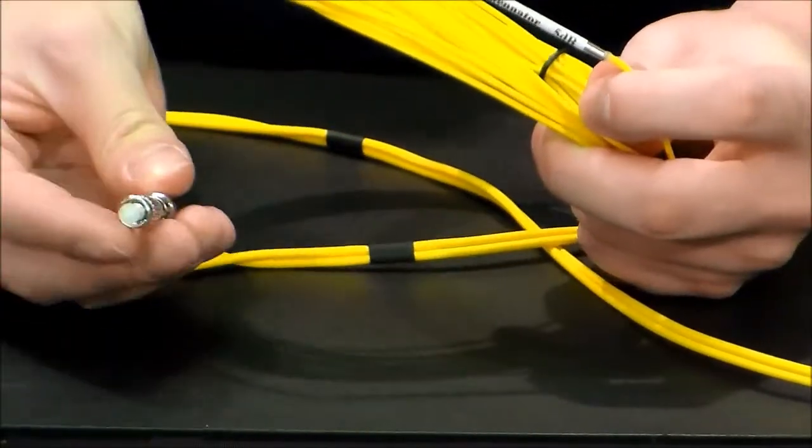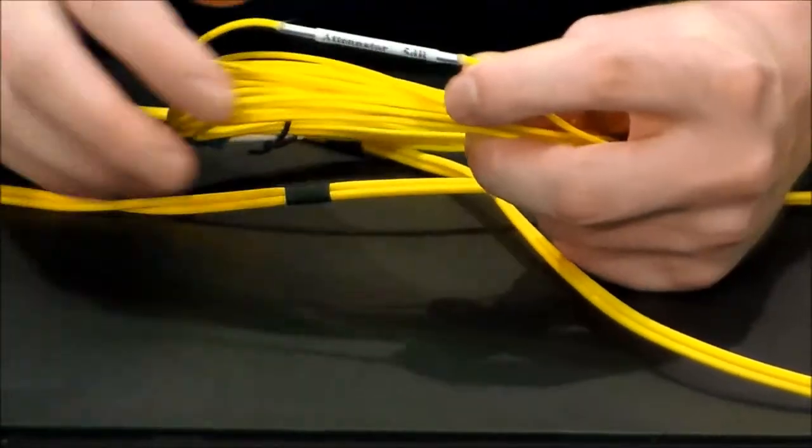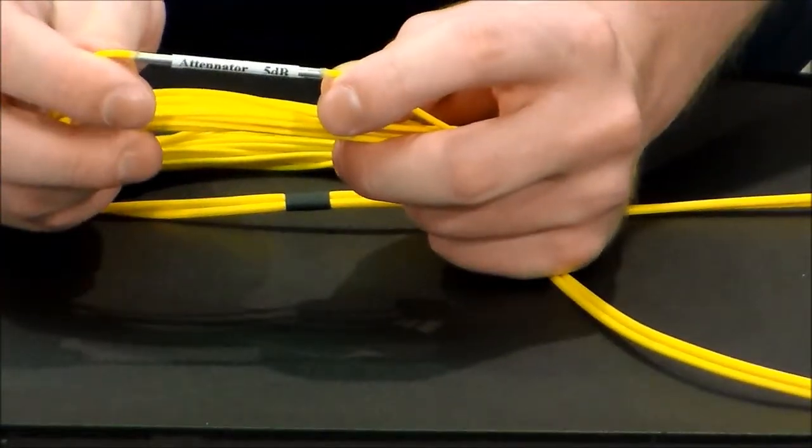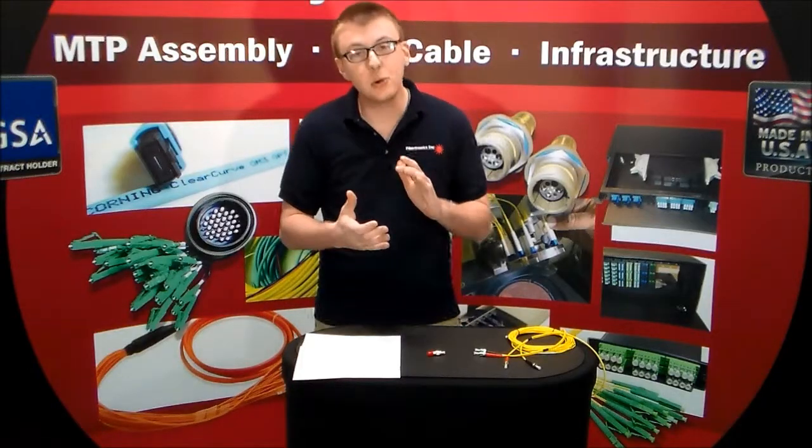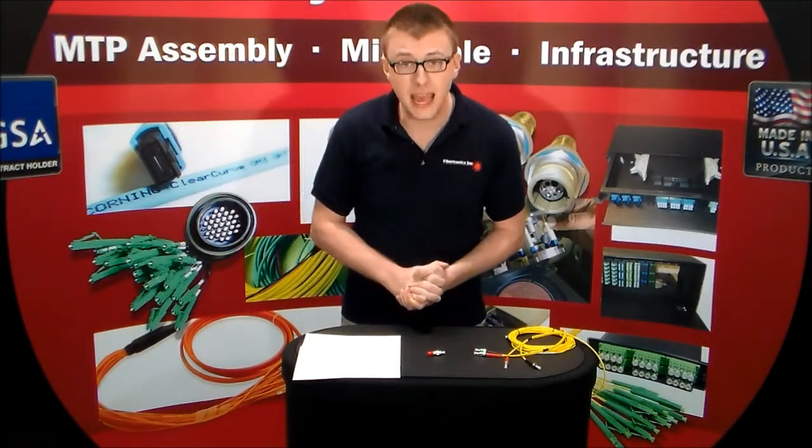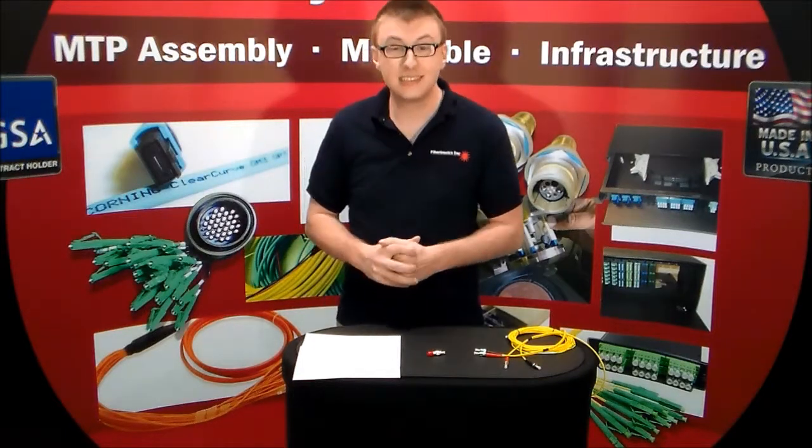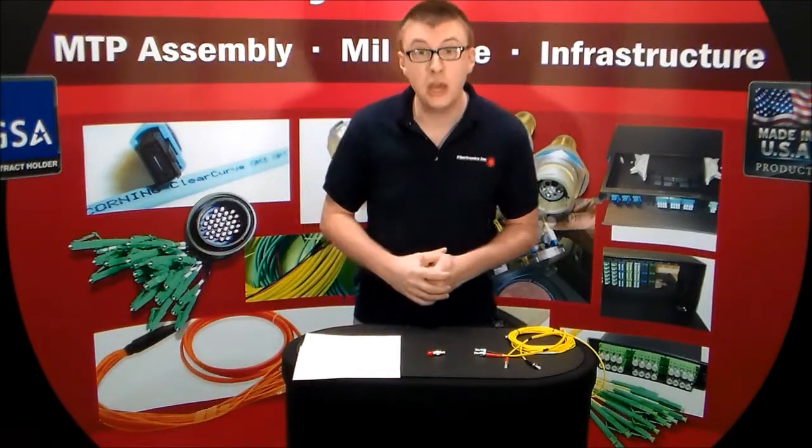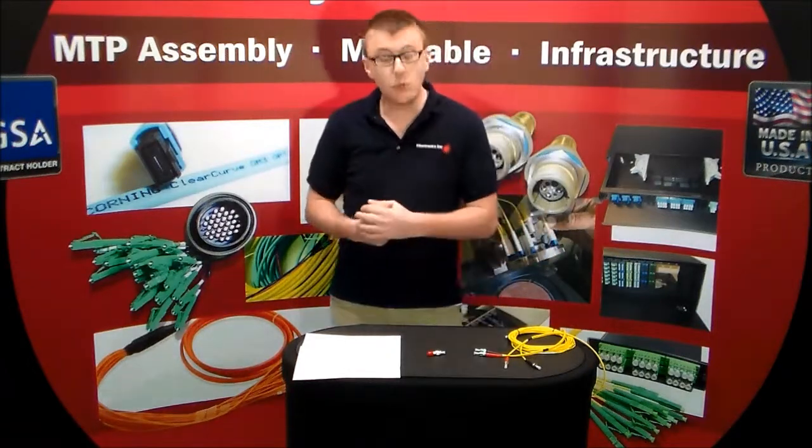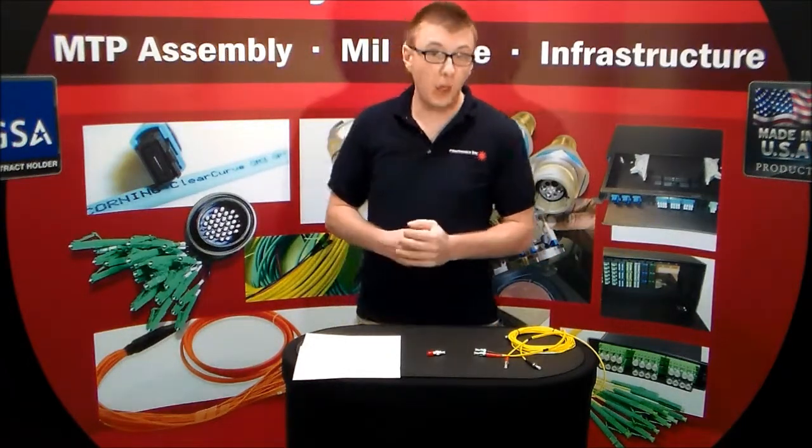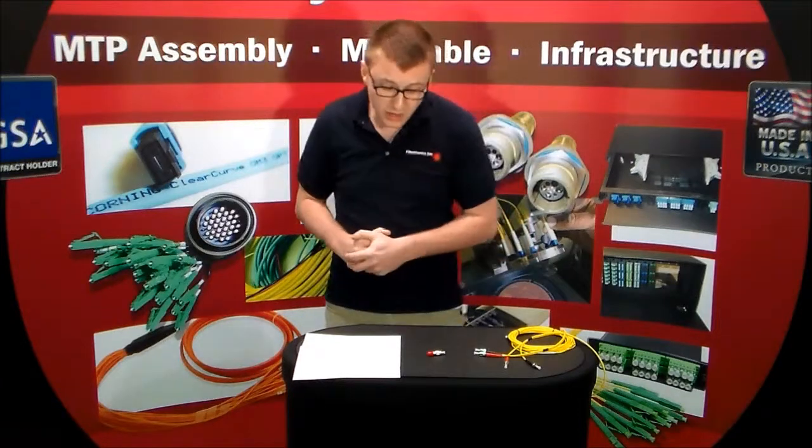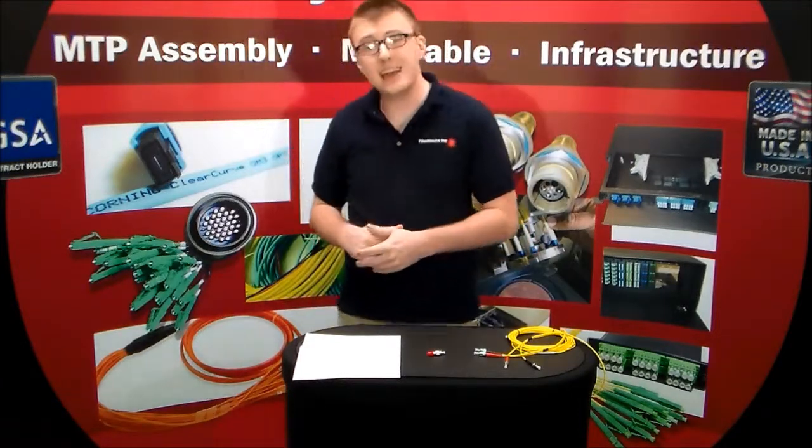For data specification sheets, ordering details, or for any questions you may have, you may visit us online at Fibrotronics-Store.com or feel free to email us at sales at Fibrotronics.com. You may also call us and one of our trained sales representatives will help you. The number is 321-473-8933.